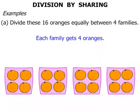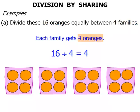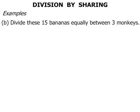In other words, each family gets 4 oranges. So we can say that 16 oranges split up between 4 families — we can write that as 16 divided by 4, and the answer equals 4. Terrific! On to the next one.